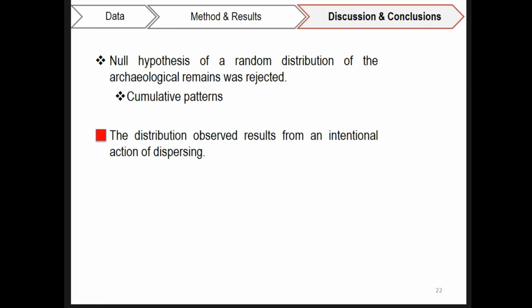From all the affirmations, we could argue, first, that the visualized dispersal of artifacts in space is the result of an intentional act of dispersing. Hence, it is a consequence of human behavior. This statement is supported by the cumulative patterns shown and by the rejection of the null hypothesis over random distribution of archaeological remains in space.